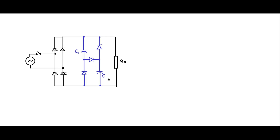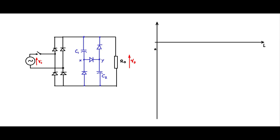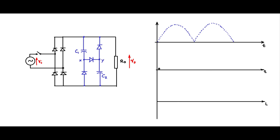Let us label the nodes: C1, C2, node X, node Y, with input Vi and output V naught. Let us look at the waveforms at various nodes to understand this better. Let me draw the rectified waveform at the input. V y is the voltage across C2, and note that voltage across C2 and C1 will be exactly the same if C1 and C2 are equal values. V x is the voltage across the corresponding diode.